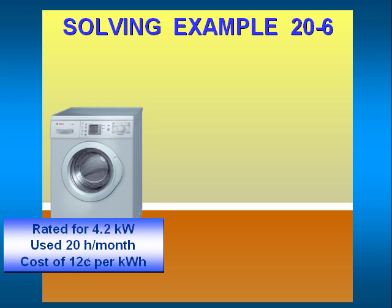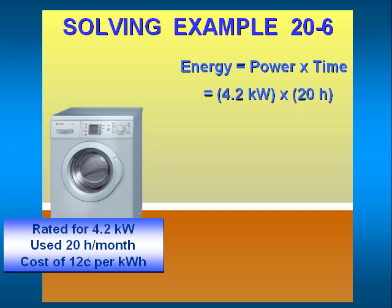Let's say that you would like to know how much an appliance costs to operate each month. You take the appliance power rating in kilowatts and multiply it times the hours used each month to get the electricity consumed in kilowatt hours for that appliance. This would be 4.2 kilowatts times 20 hours per month equals 84 kilowatt hours per month.